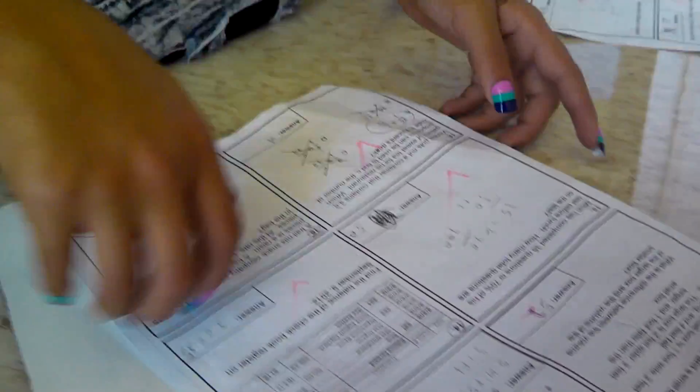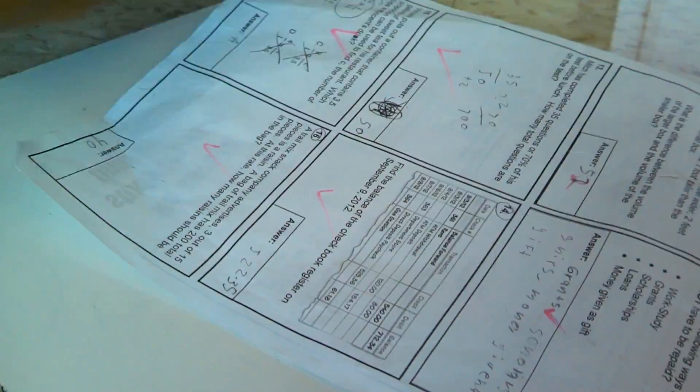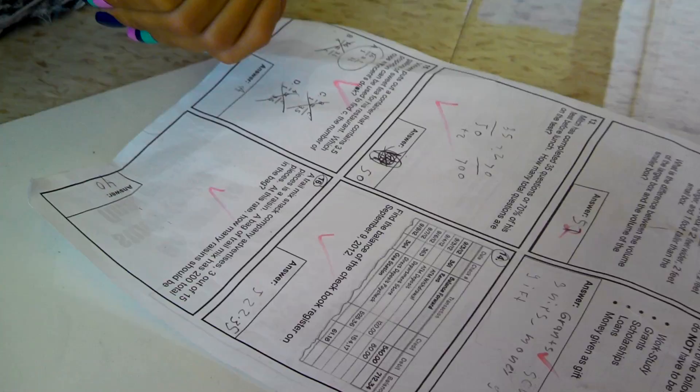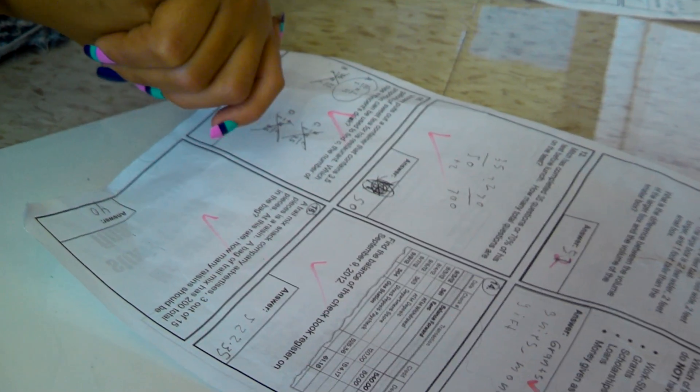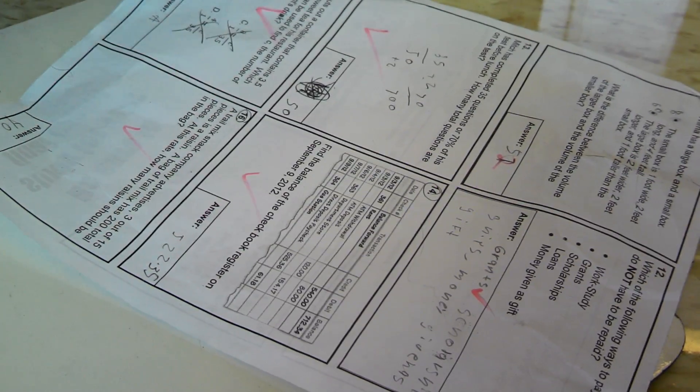Question 14 says, what are the balances of the checkbook for history of September 9, 2012? The question is transaction. Check 364, date September 9, 2012.